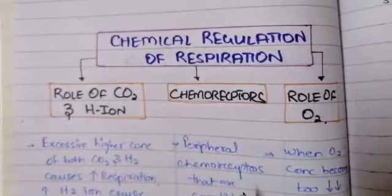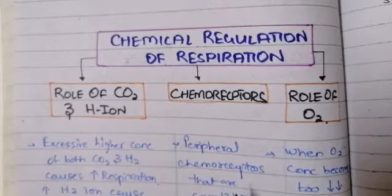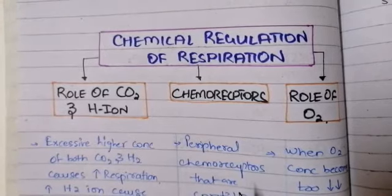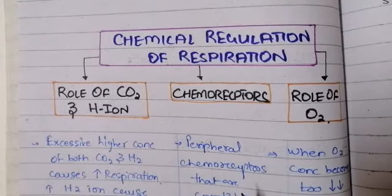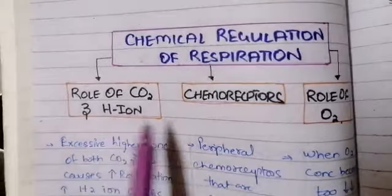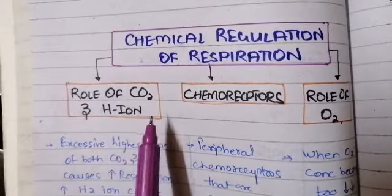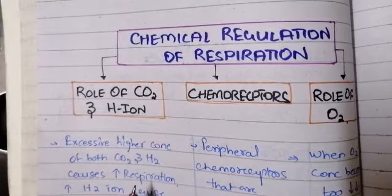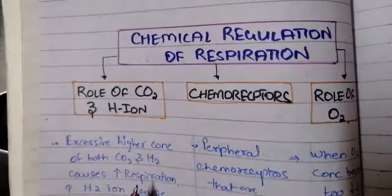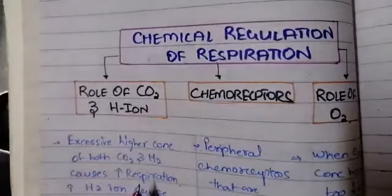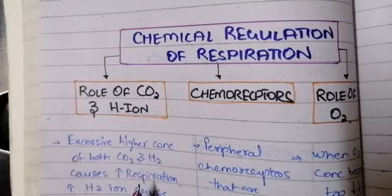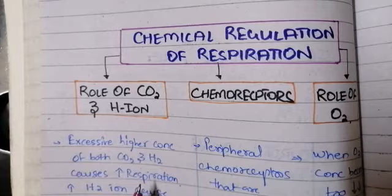Starting with chemical regulation: it includes certain ions and carbon dioxide levels that are important for blood chemoosmolarity. To maintain blood osmolarity, carbon dioxide and oxygen levels should remain normal. In conditions like decreased respiratory rate, these levels can increase or decrease, sending signals to the respiratory centers of the neuronal mechanism to increase or decrease respiration. So they are secondary mechanisms that control neuronal regulation.